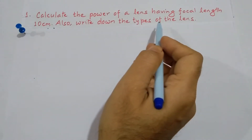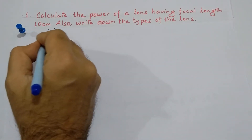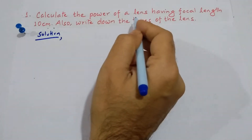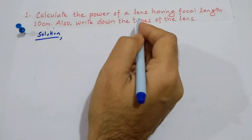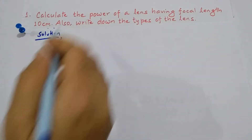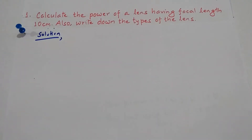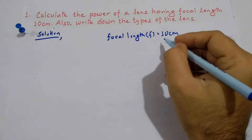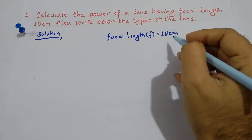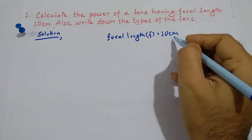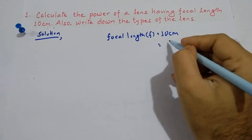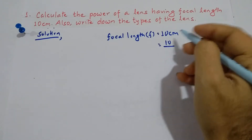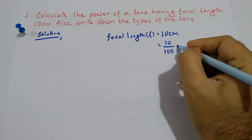Also write down the type of the lens. Now let's write the solution. We have to calculate the power of lens. What is given here: focal length F equals 10 centimeter. Now we have to convert it into SI unit. This is CGS unit — centimeter — so let's convert centimeter into meter by dividing by 100.